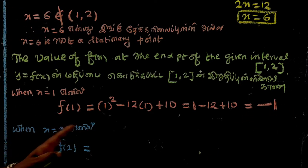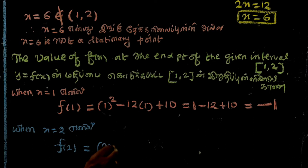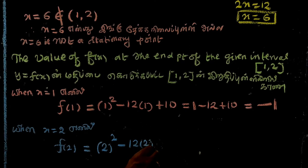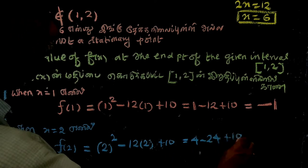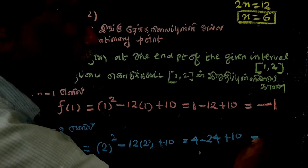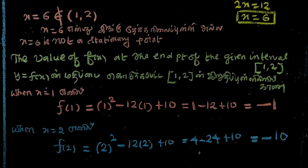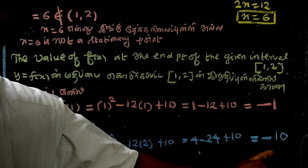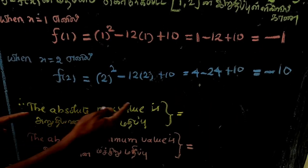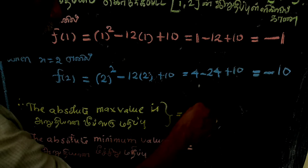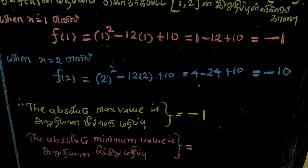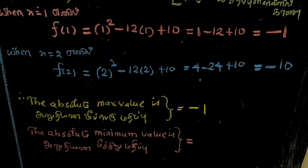When x equals 2, f of 2 equals 2 squared minus 12 into 2 plus 10, which equals 4 minus 24 plus 10. That gives 14 minus 24, which is minus 10. The absolute maximum value is minus 1 and the absolute minimum value is minus 10.